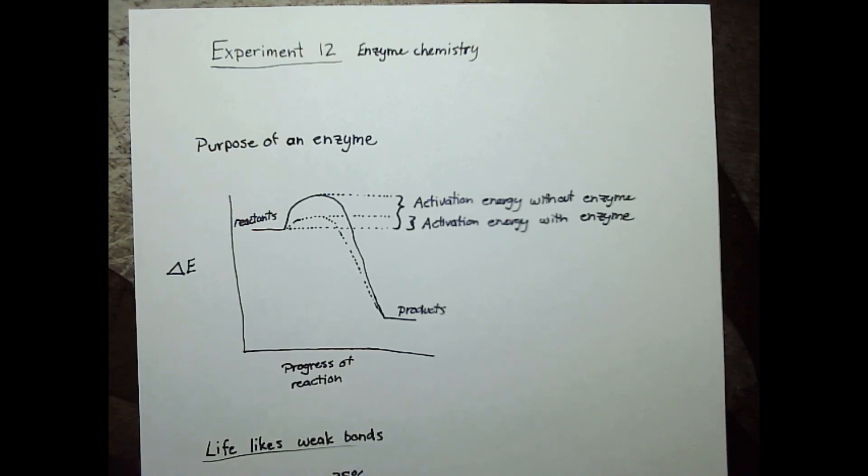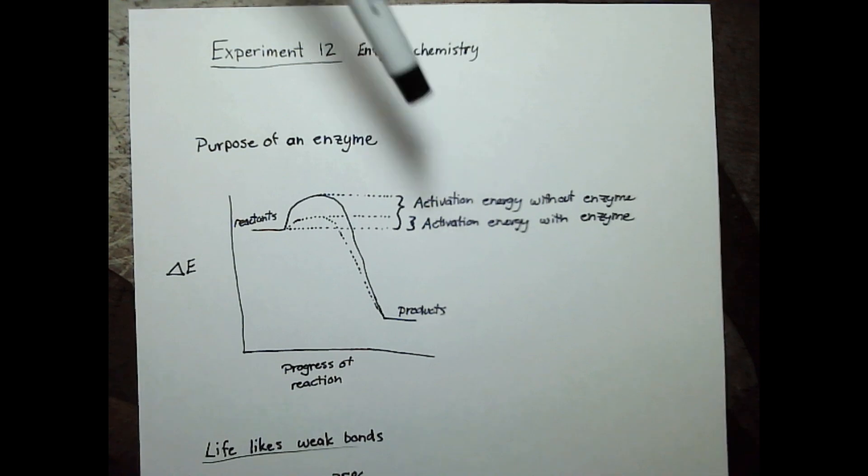Experiment 12 will be looking at enzyme chemistry. The purpose of an enzyme is to lower the activation energy of a certain reaction. Here I have a reaction coordinate showing the activation energy without the enzyme and then the activation energy with the enzyme.